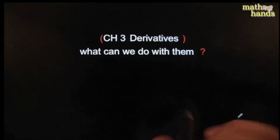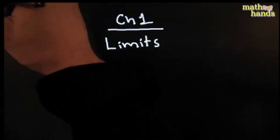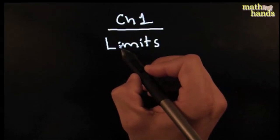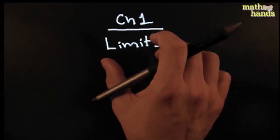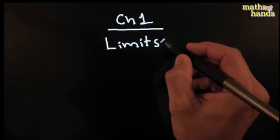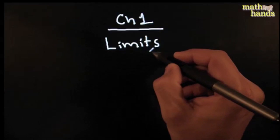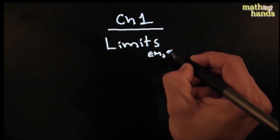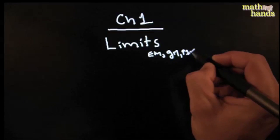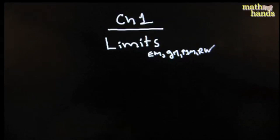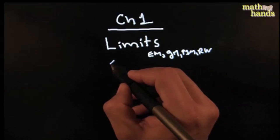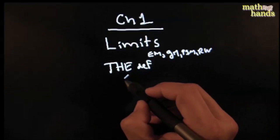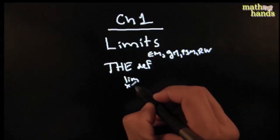I want to take a second to look back at the other chapters. Chapter 1 had some very important highlights: the introduction of the idea of limits. We introduced it in several steps — first with intuitive ideas using the engineer's method, the graphing method, the plug-in method, and then we introduced the formal definition.